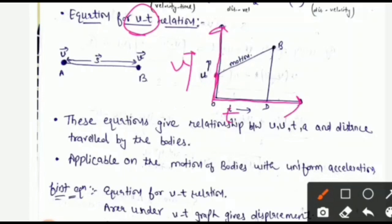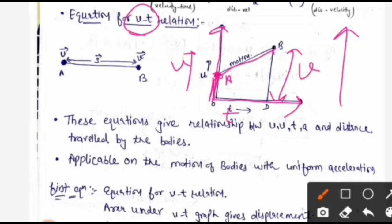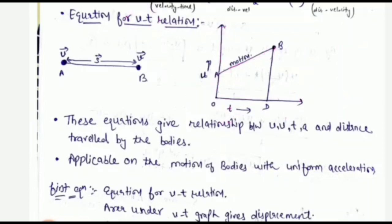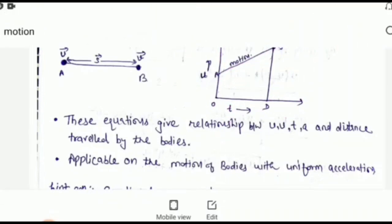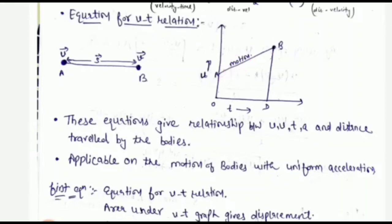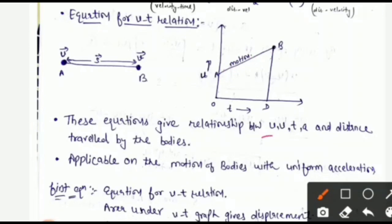Any body moves from point A. On the graph, 0 to A represents the initial velocity (u), 0 to D on the x-axis represents the time (t), and the line from B represents the final velocity (v). These equations give the relationship between final velocity, initial velocity, time, acceleration, and distance traveled by the body.